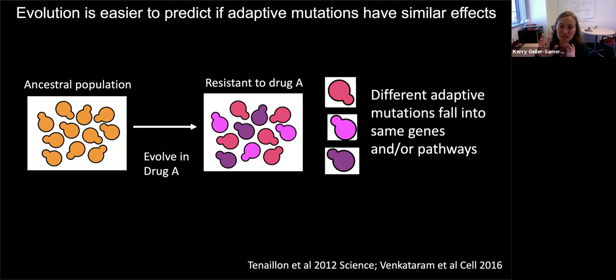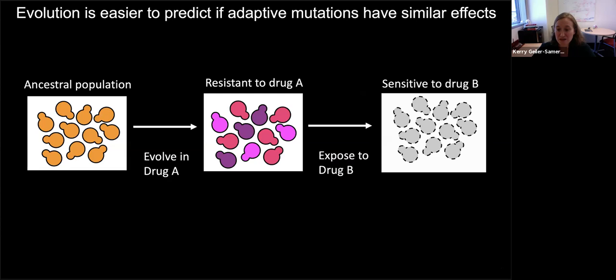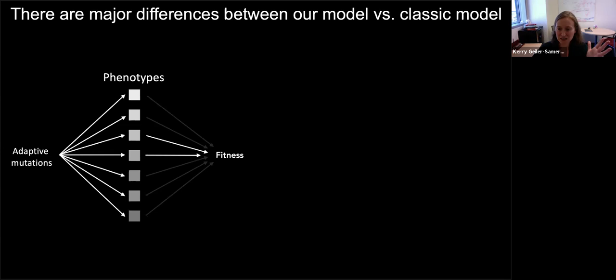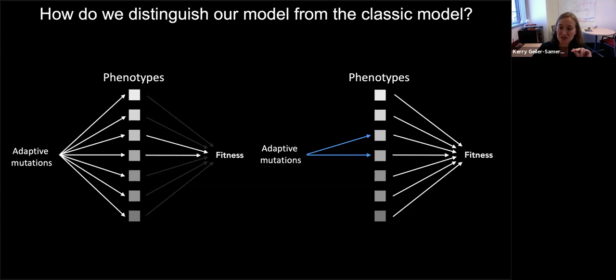But if there's latent phenotypic complexity among those adaptive mutants — with some affecting different phenotypes than others — you might not be able to predict what they'll do in a new environment. This is different from the classic model, where we assume adaptive mutations affect very few phenotypes because if they affected more, they would have negative side effects and not be adaptive. So how do we tell these two models apart? We need a lot of mutants, and then we need to see if they have latent phenotypic differences.